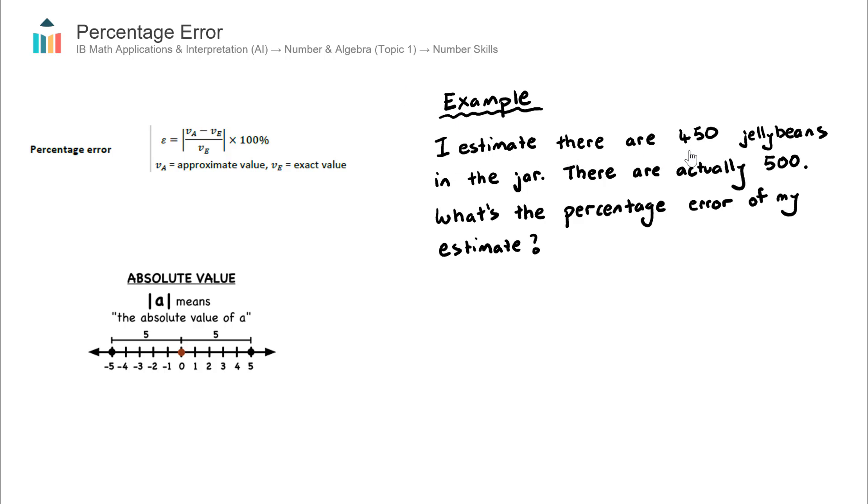I estimate that there are 450 jellybeans in a jar. There are actually 500, so therefore I have a difference between my estimation and the exact. What's the percentage error of my estimate?